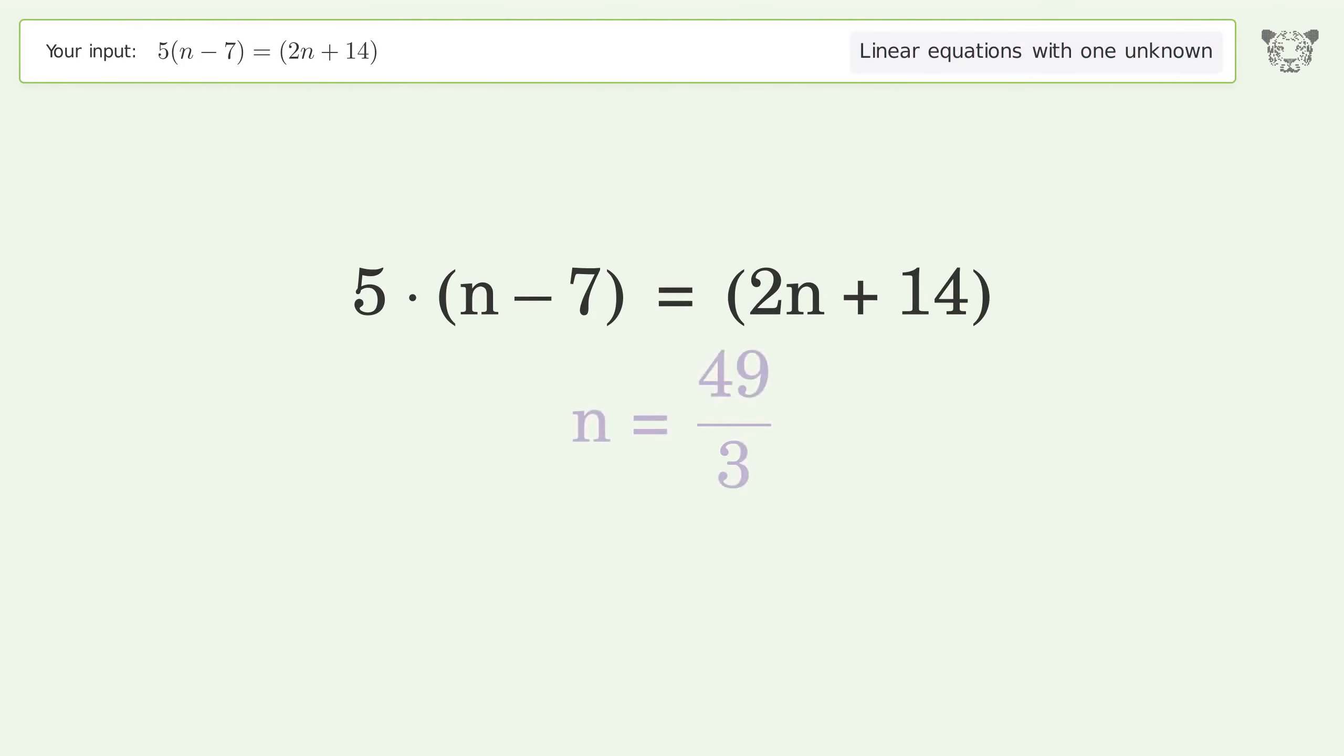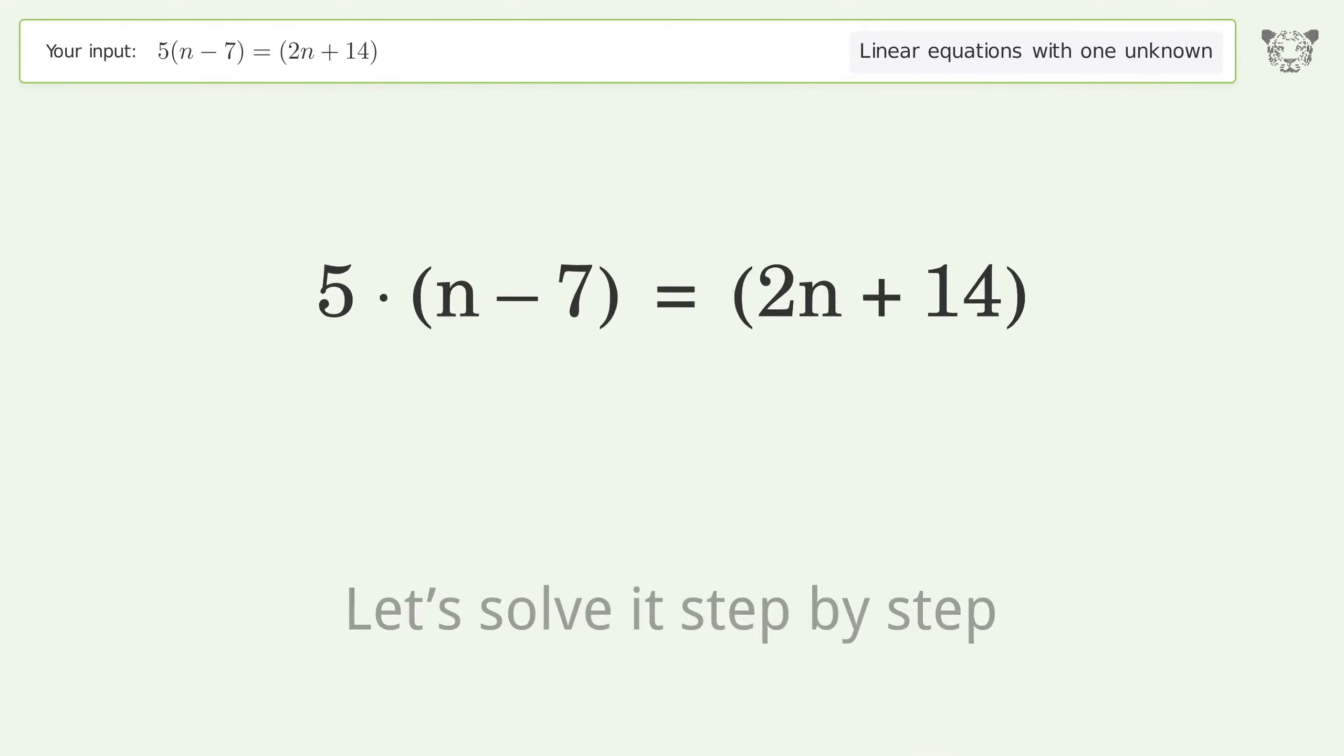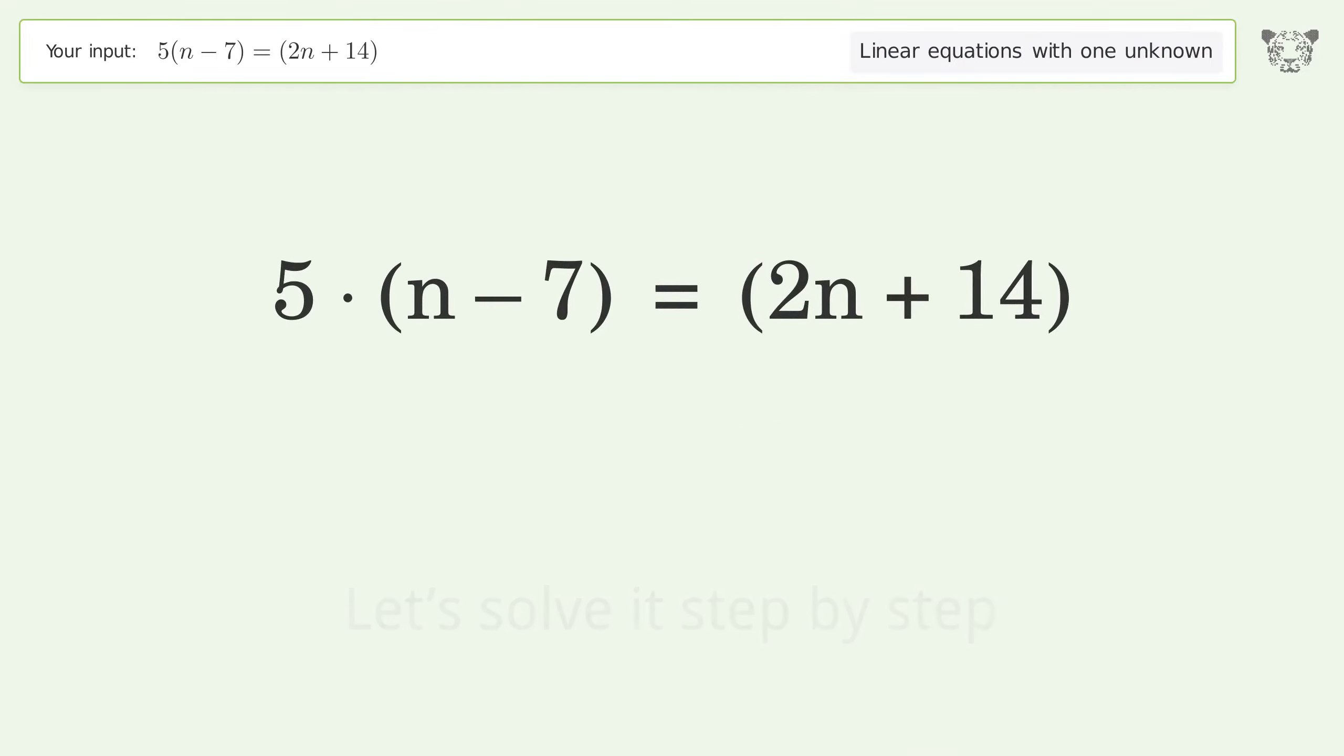You asked Tiger to solve this. It deals with linear equations with one unknown. The final result is n equals 49 over 3. Let's solve it step by step. Simplify the expression.